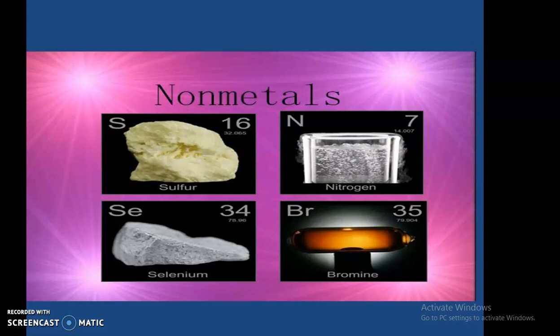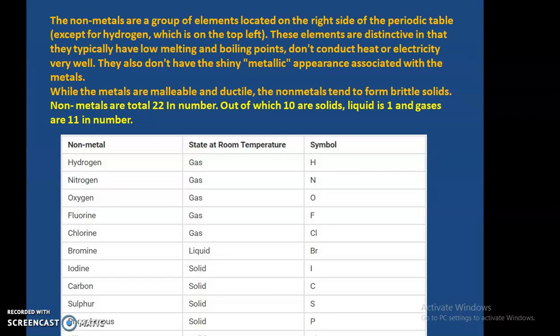Non-metals are a group of elements located on the right side of the periodic table, except for hydrogen which is on the top left. These elements are distinctive in that they typically have low melting and boiling points, do not conduct heat or electricity well, and they don't have the shiny metallic appearance associated with metals.